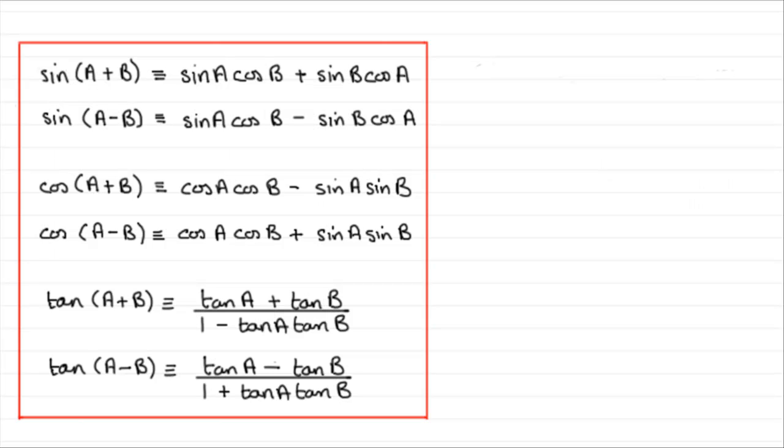Hi, now in this tutorial what I want to do is introduce you to these identities here, often called the compound angle formulae or addition formulae. And what they do is they give us rules for adding or subtracting two angles from one another and finding out the sine, cosine or tangent.